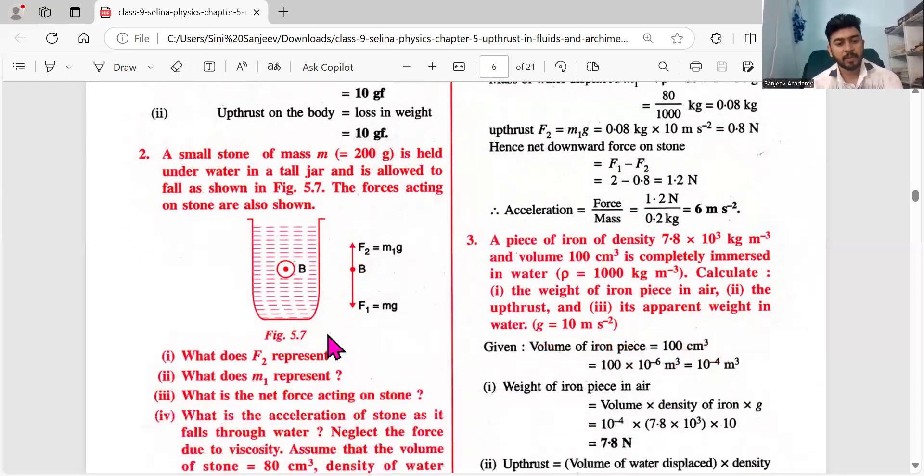Fourth question: What is the acceleration of the stone as it falls through the water? Neglect the force due to viscosity. Viscosity or viscous force meaning - if I pour water on the floor and if I'm pouring honey on the floor, which will move faster? Obviously the water. Honey will flow, but the motion will be less compared to water. Ability to resist motion - that is called viscous force. Viscosity is more in honey.